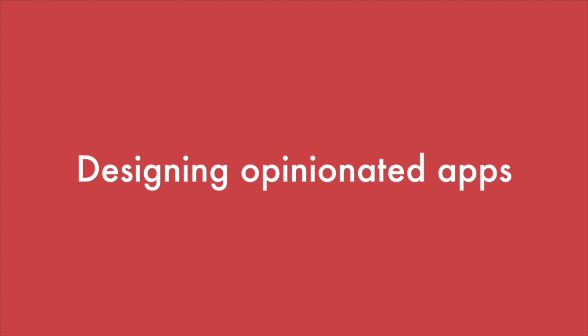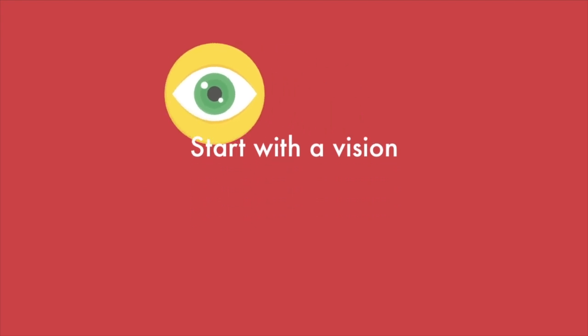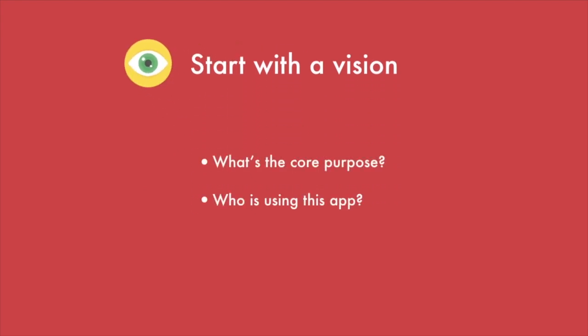Let's talk about what we can do to make our own apps more opinionated. Well, obviously, have a vision — start with a vision. You really should know what the core purpose of your app is, and also who it's for. And the answer to 'who's using this app' shouldn't be everyone, right? Because everyone's not going to use your app no matter what. The way I try to answer this question is I actually try to create a mental model of the person who's using my app.